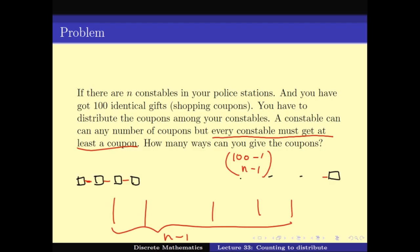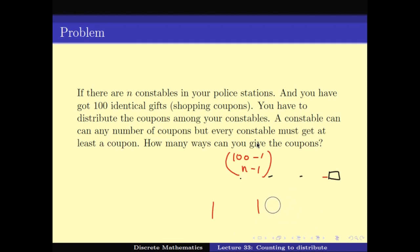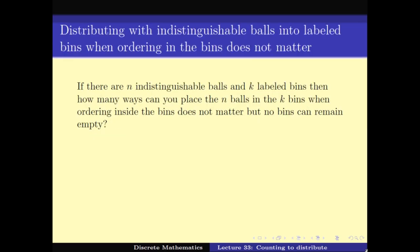Generalizing: if we have n indistinguishable balls and k labeled bins, and the number of ways to place the n balls in k bins with no bin empty (ordering inside bins does not matter) is found by arranging the balls in a line — there are n − 1 gaps — and choosing k − 1 positions for the walls. The answer is C(n − 1, k − 1).